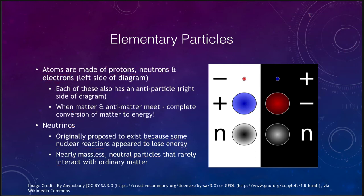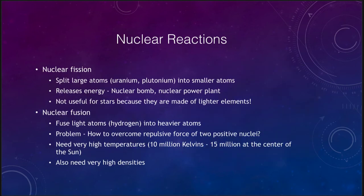Let's look at different types of nuclear reactions. There is nuclear fission and nuclear fusion. Nuclear fission is what we use in nuclear reactors here on Earth. Nuclear power plants use nuclear fission. They take large atoms such as uranium or plutonium and split them apart into smaller atoms. That releases energy. However, this is not useful for stars because stars are not made up of uranium and plutonium; they are made of lighter elements, hydrogen and helium.